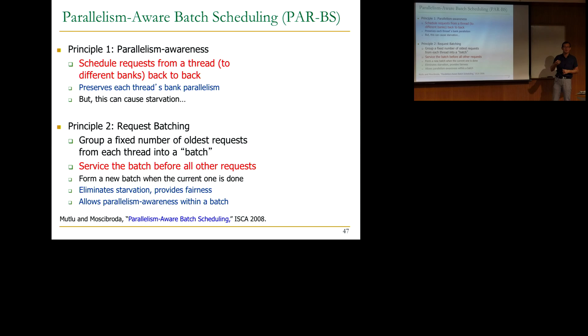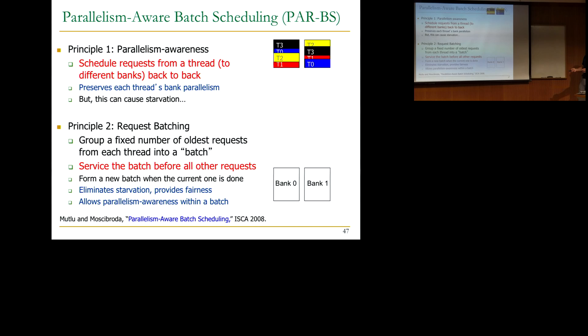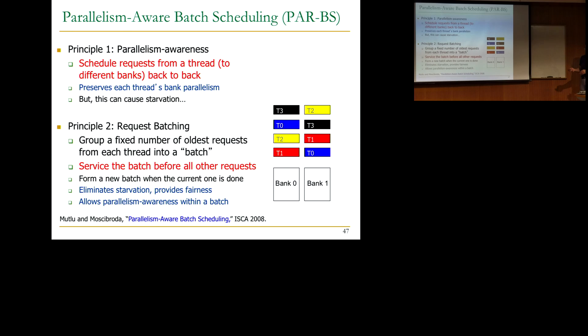A batch means you group a fixed number of the oldest requests from each thread into what's called a batch, and you service the batch before all other requests. You form a new batch when the current one is done. This ensures no starvation — it's starvation-free and provides some sort of fairness. It also allows parallelism awareness within a batch. Within a batch you can be very unfair but parallelism-aware, while across batches you ensure starvation doesn't happen. Batching is used in IO systems like disk systems for this purpose.